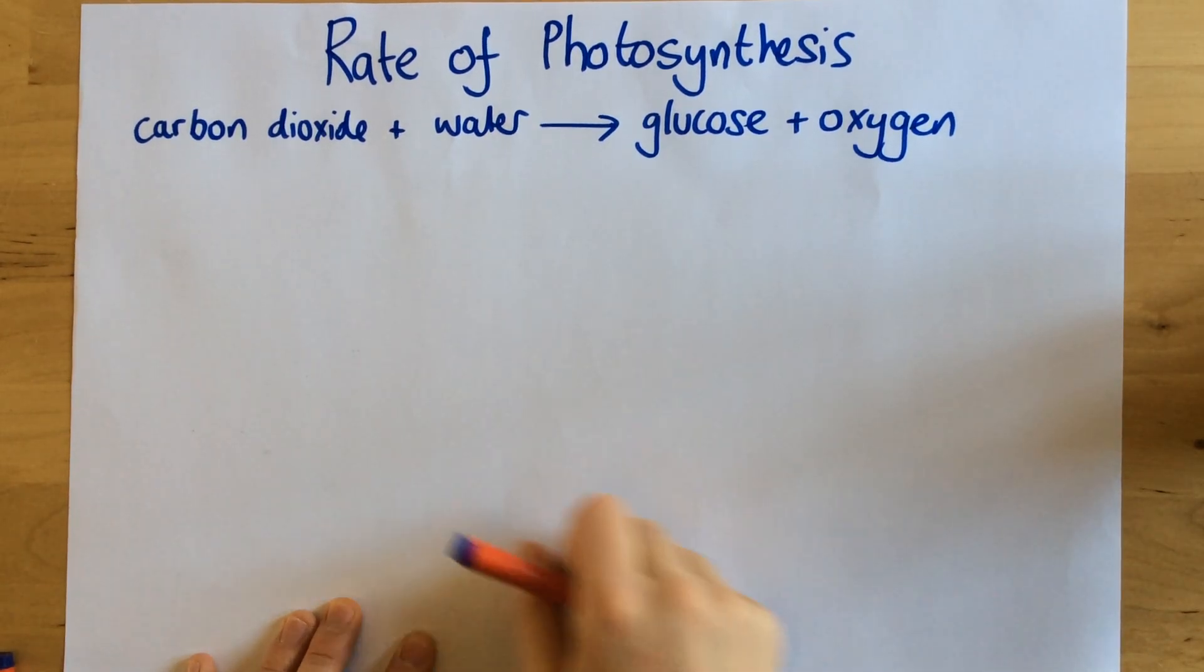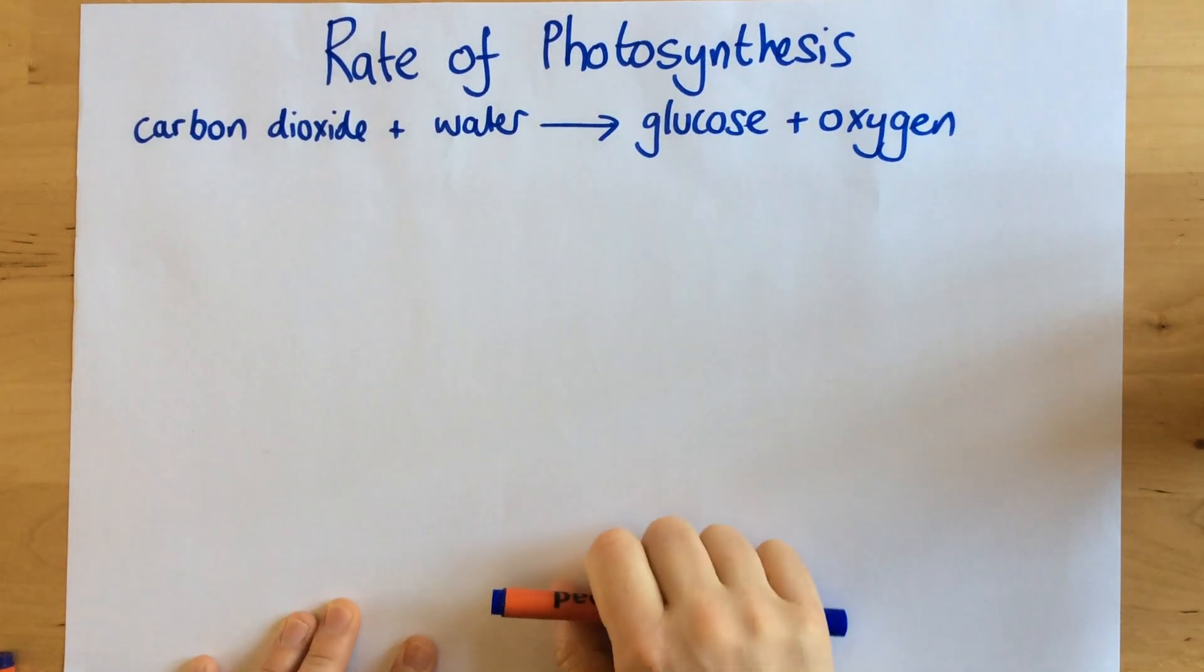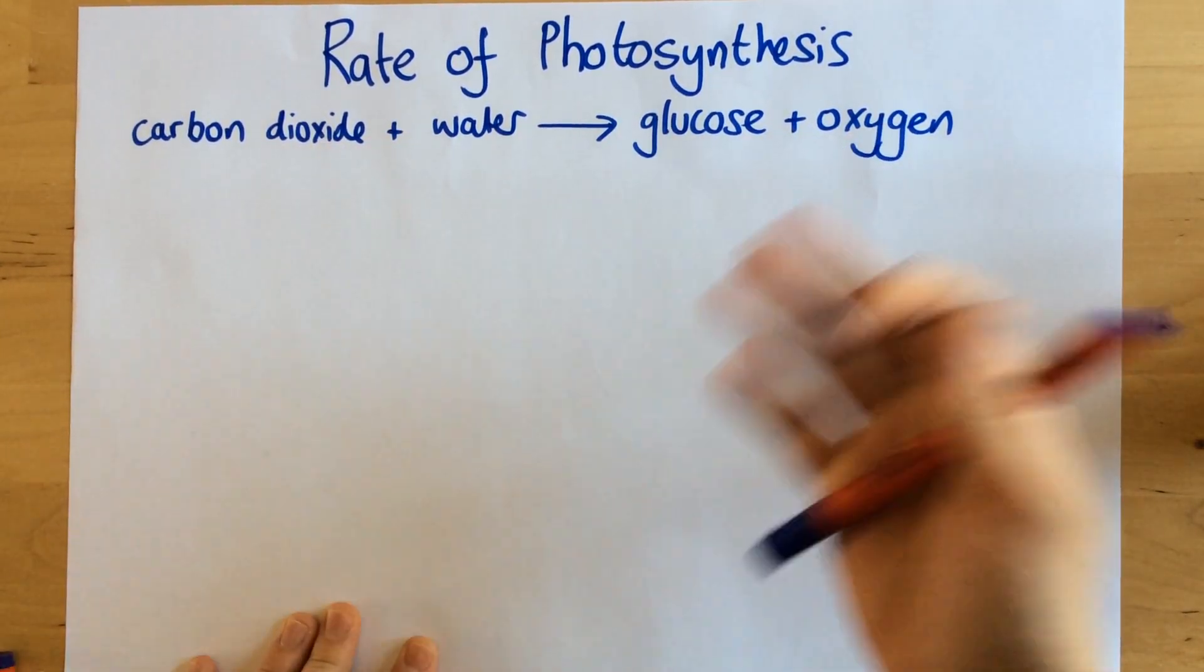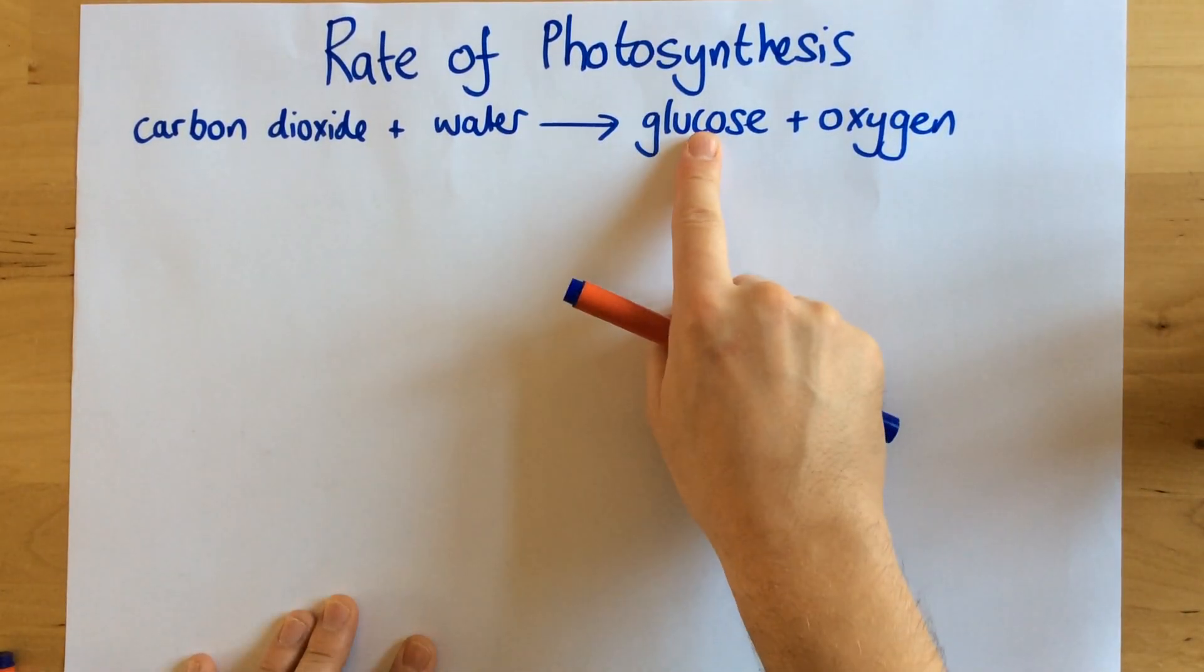Okay, today I'm going to talk to you about an experiment to determine the rate of photosynthesis. So first of all, I've written the equation for photosynthesis. There's another video to talk through this more, but just quickly to summarize, it's the process by which plants make their own food in the form of glucose.